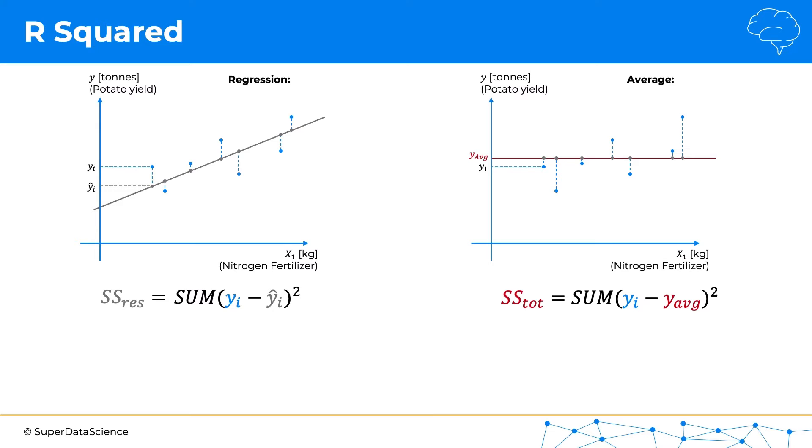And now we can calculate R-squared. R-squared is defined as one minus the ratio between the residual sum of squares and the total sum of squares. Now, let's pause here for a second and discuss this a bit.